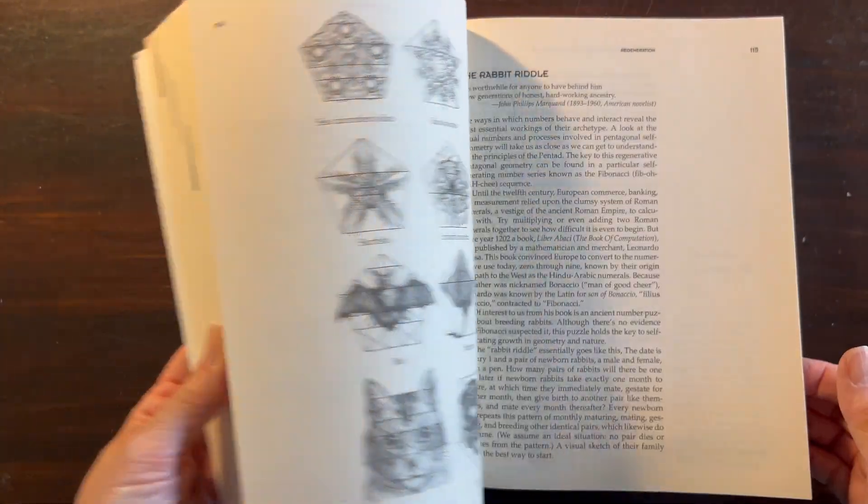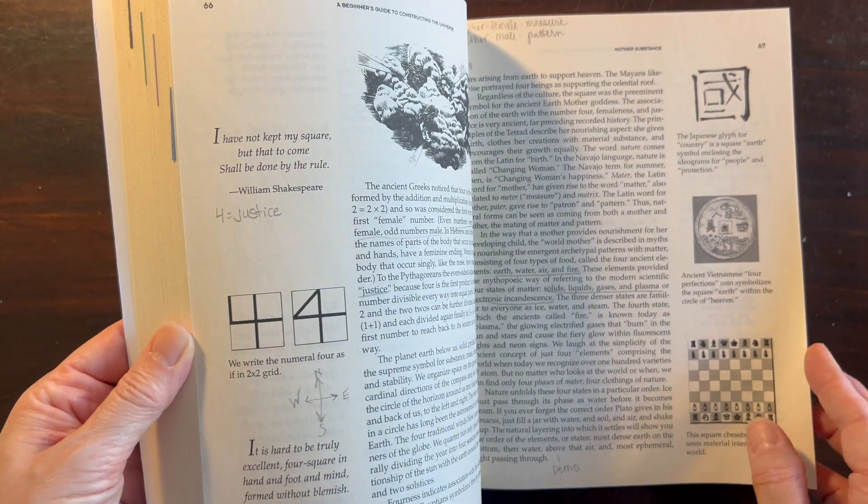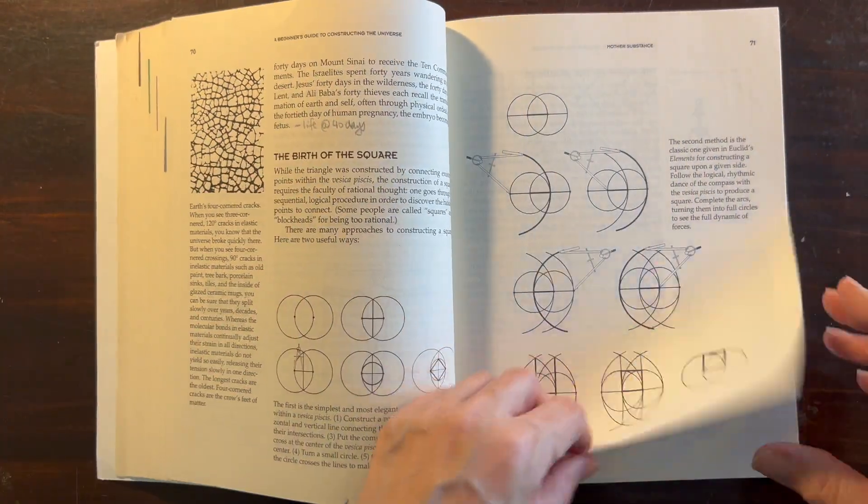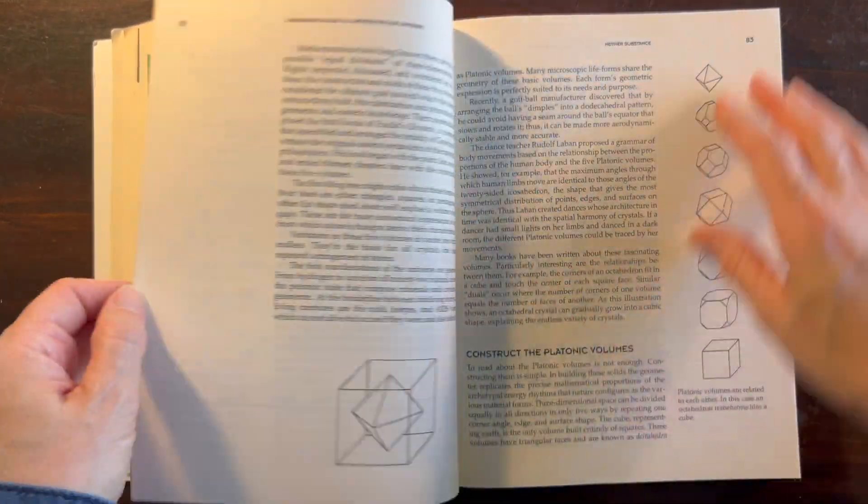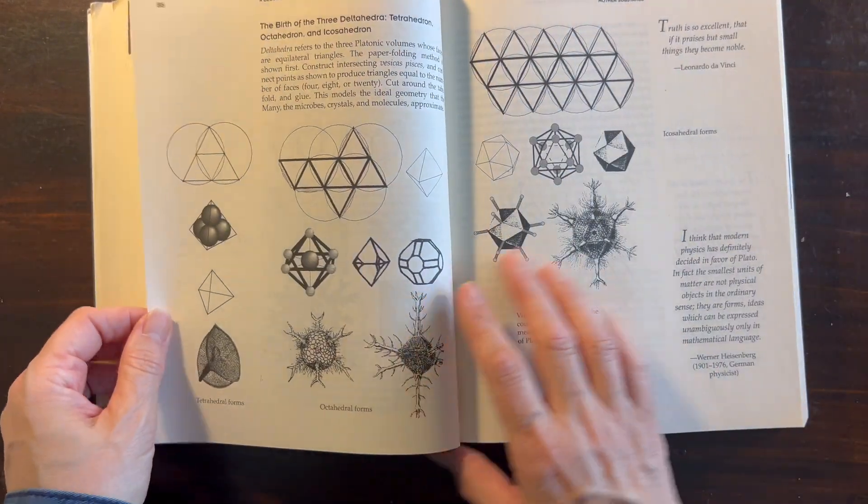We're using this book called A Beginner's Guide to Constructing the Universe. It's an amazing book that goes through the quality of numbers from 1 to 10. Today we're working on the quality of the number 4 and we're looking at volumes and creating the regular solids.